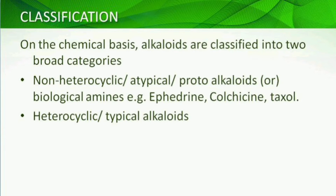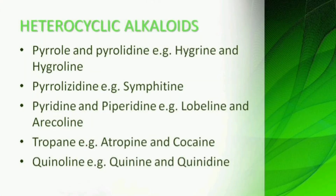The second category is heterocyclic alkaloids, which are called typical alkaloids. Looking at heterocyclic ring types: first is pyrrole and pyrrolidine — examples are hygrine and hygroline. Pyrrolizidine — example: symphytine. Pyridine and piperidine ring — examples: lobeline and arecoline. Tropane alkaloids — examples: atropine and cocaine.